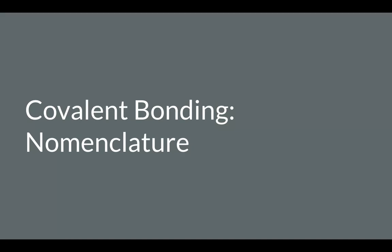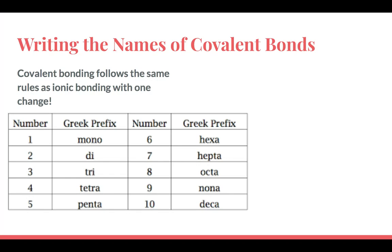Our next section of nomenclature is for covalent bonding. Covalent bonding is named almost the same as ionic bonding, but it does have one change: covalent bonding uses the subscripts to create a prefix title. These are Greek prefixes — mono, di, tri, tetra, penta, hexa, hepta, octa, nona, and deca. The small numbers you see on either side are called subscripts in a formula, and that helps create the name.